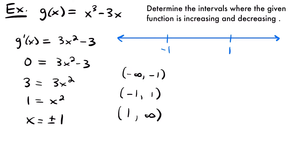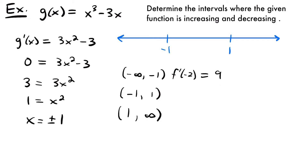Between negative infinity and negative 1, I'll pick negative 2. So f prime of negative 2 equals 3 times negative 2 squared minus 3. Negative 2 squared is 4, times 3 is 12, minus 3 is 9. Since 9 is positive, the function is increasing on this interval. Then for the interval between negative 1 and 1, I'll pick 0. F prime of 0: 0 squared is 0 times 3 is 0, minus 3 is negative 3. That slope is negative, so the function is decreasing on this interval.